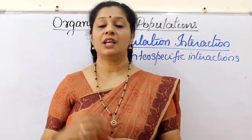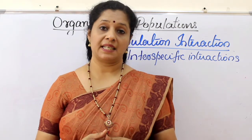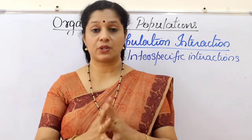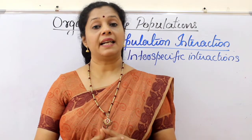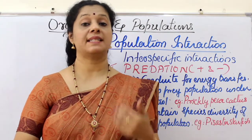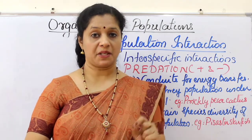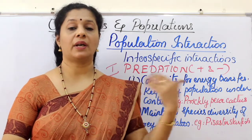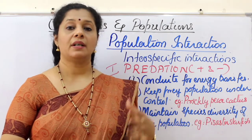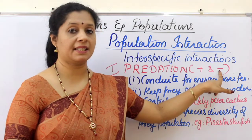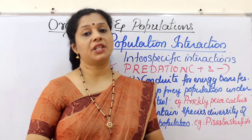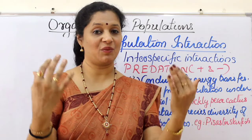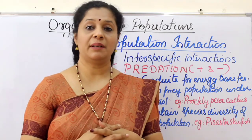Now let us discuss one by one among all these inter-specific interactions. In predation, parasitism, and commensalism, the interacting species live close together. In predation, one organism is eating the other as its food — one is benefited, the other is detrimental. When we think about predation, the first image that comes to mind is a tiger chasing a deer. But that is not the only predation — a cattle grazing on grass is also predation, even though we don't feel that way.